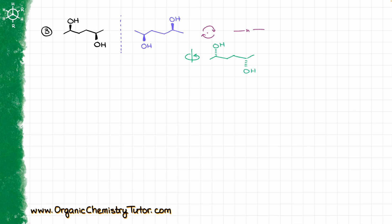What if I try to rotate it in the horizontal plane now? If I do this type of rotation, I will again have the OH looking away from me and another OH looking away from me. Neither rotation technique can make my mirror image into the original molecule, so these are non-superimposable mirror images, and that is definitely not a meso compound, because a meso compound would be superimposable.